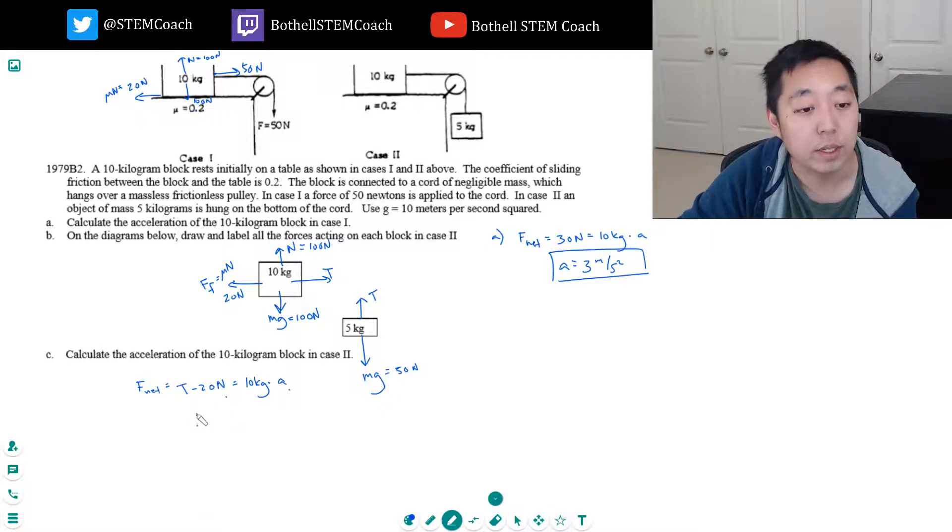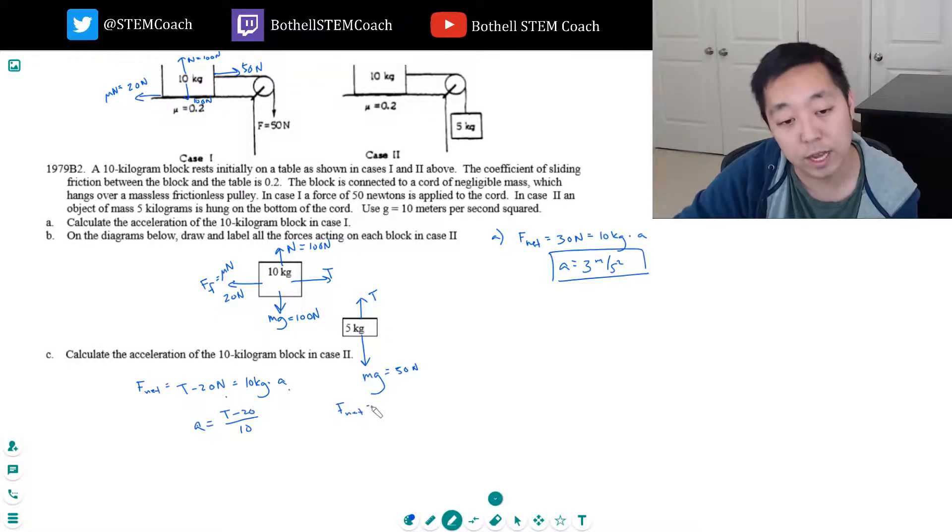So I can solve for a, it's t minus 20 over 10. But I don't know what t is. So then I got to look at this block here. His net force, he's got a force down, it's mg minus t. And that has to equal his 5 kilograms times a also.